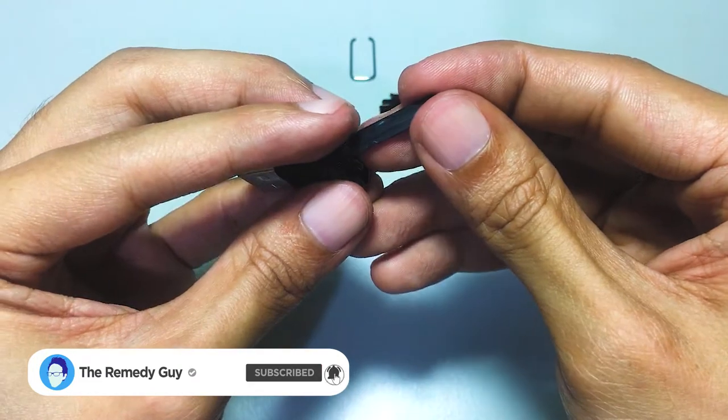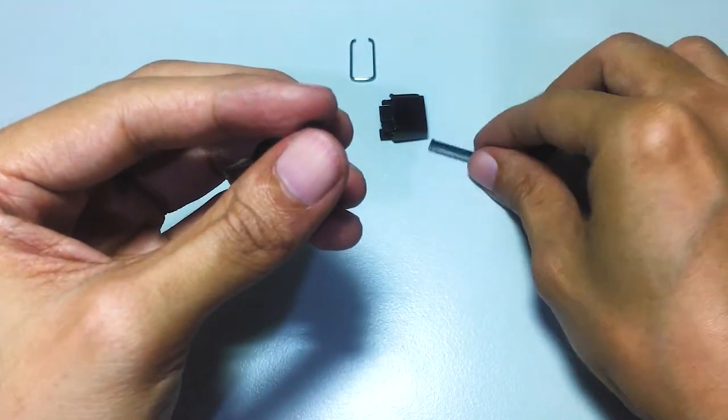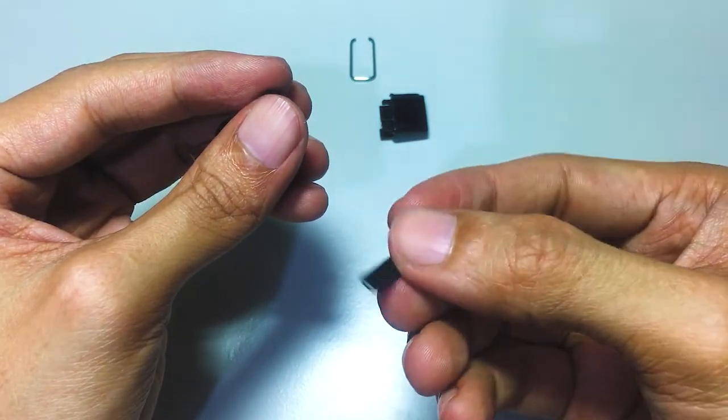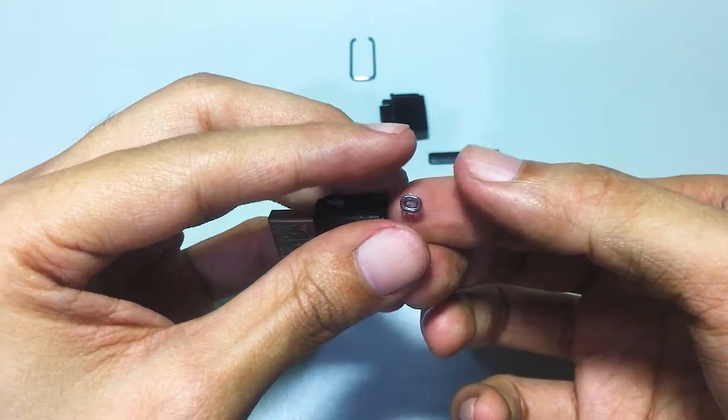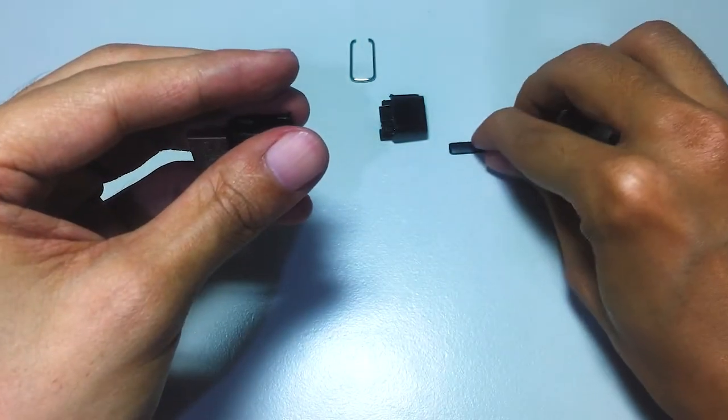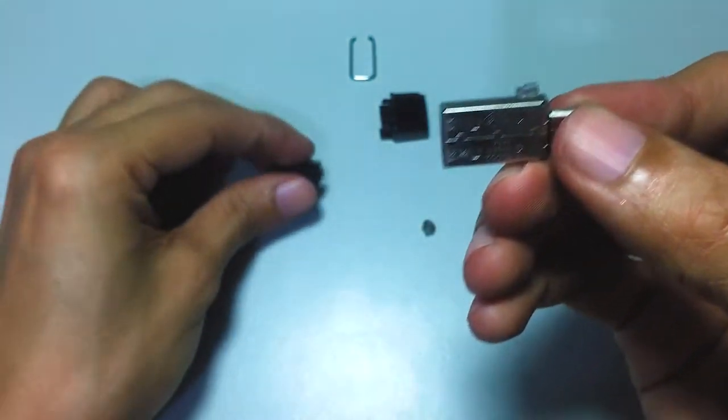A plastic strip, the broken knob, and the USB itself.